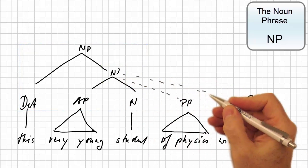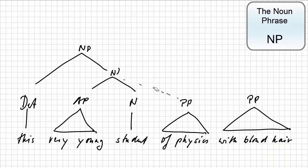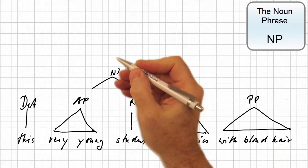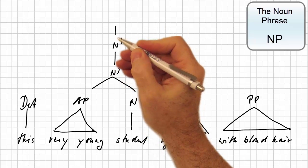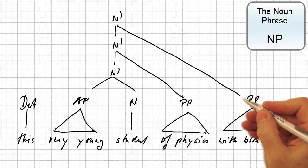But where shall we put the two prepositional phrases? Well, in order to integrate them into the noun phrase, we have to expand the n-bar node twice more, and make them mothers of the two prepositional phrases.